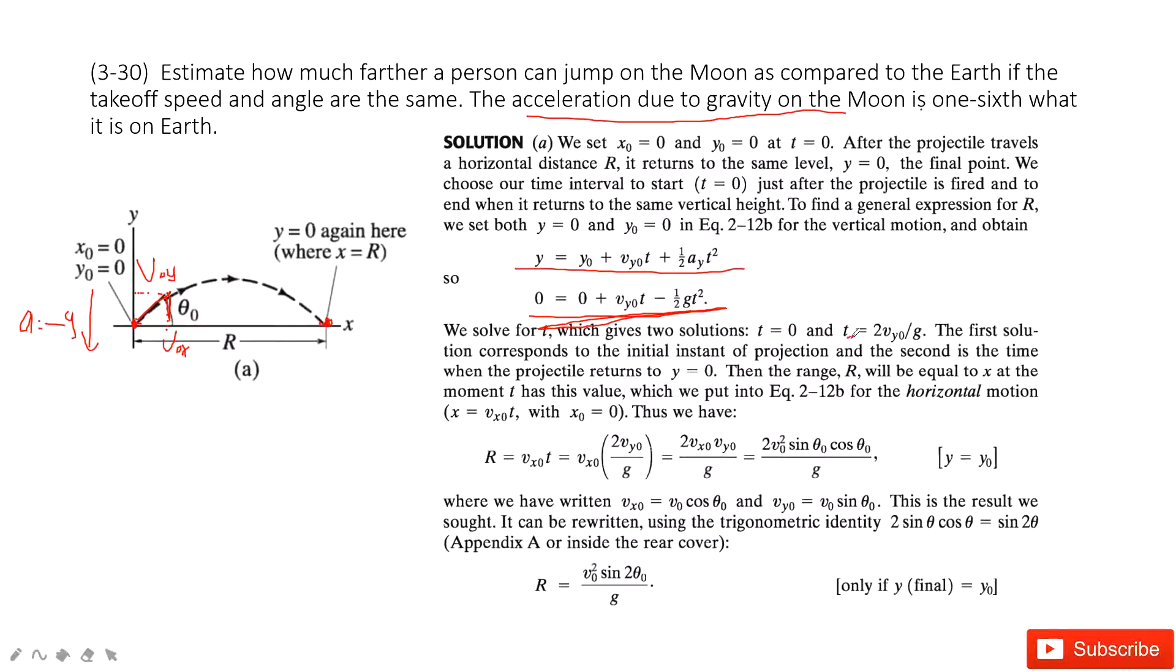The time t is zero or two times vy0 divided by g.